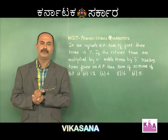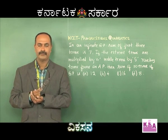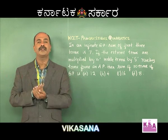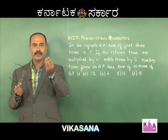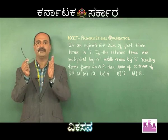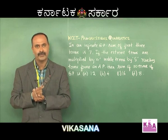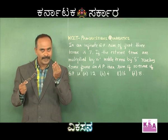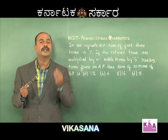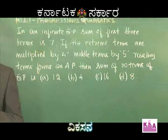For example, if the infinite GP sum equals 2, the first term is usually 1. If the sum is 7, the first term is usually 4. By trial and error we can assume a few numbers and work out the problems. Let us try one such problem.